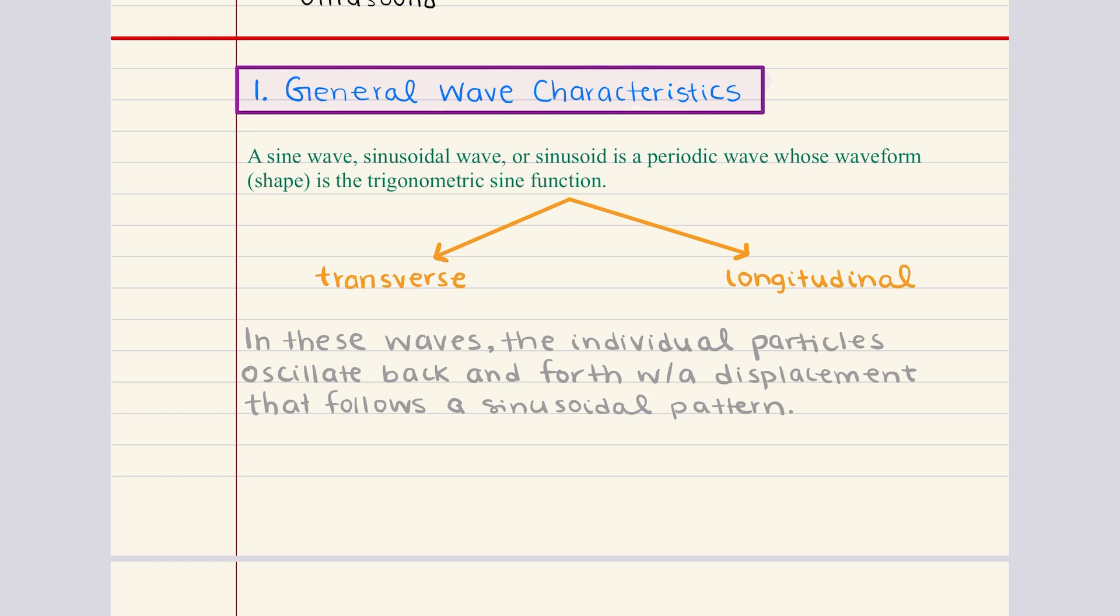Now sinusoidal waves, they can take two primary forms, transverse waves and longitudinal waves. And although both involve particles oscillating back and forth, the difference lies in the direction of particle motion relative to the wave's propagation.